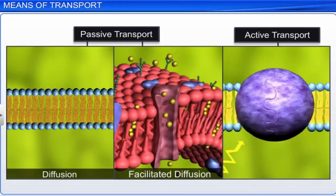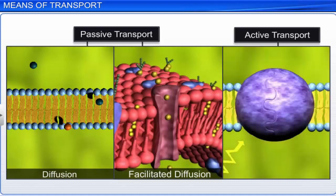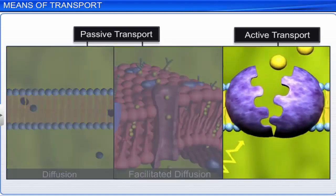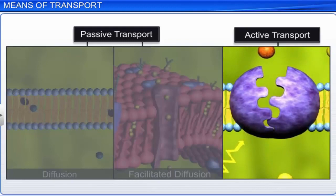Of all the means of transport discussed, both diffusion and facilitated diffusion always take place along a concentration gradient and without the expenditure of any energy. Whereas only active transport uses energy.